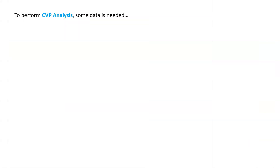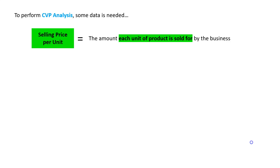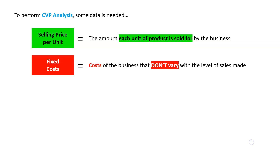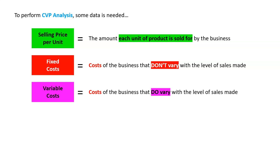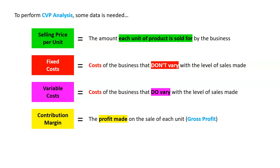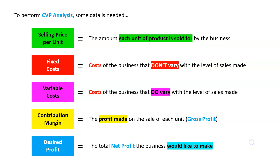To perform CVP analysis, some data is needed. These are terms we're going to use throughout the rest of the chapter. We're going to need the selling price per unit, which is the amount each unit of product is sold for. We're going to need the fixed costs — costs of the business that don't vary with the level of sales made. That is different to variable costs, which are costs that do vary with the level of sales made. We also need the contribution margin, which is effectively the profit made on the sale of each unit — what we'll call gross profit later in the unit. And lastly, the desired profit: the total net profit that the business would like to make.